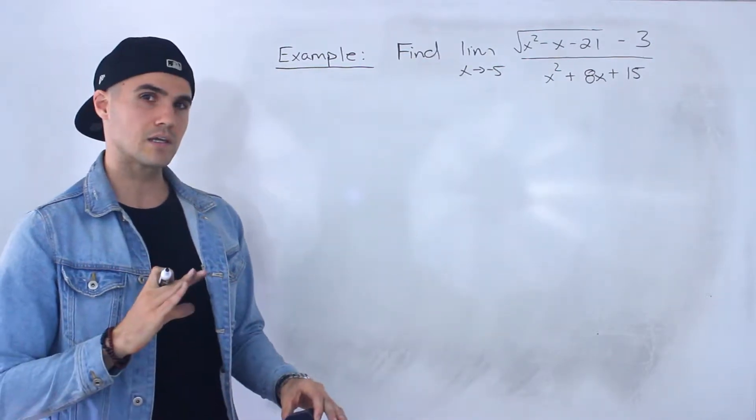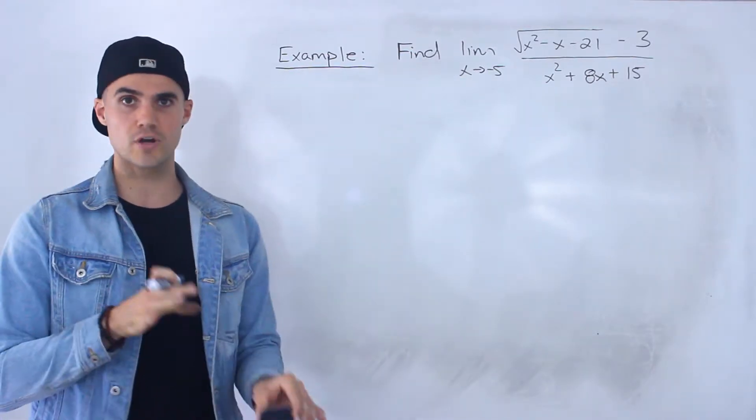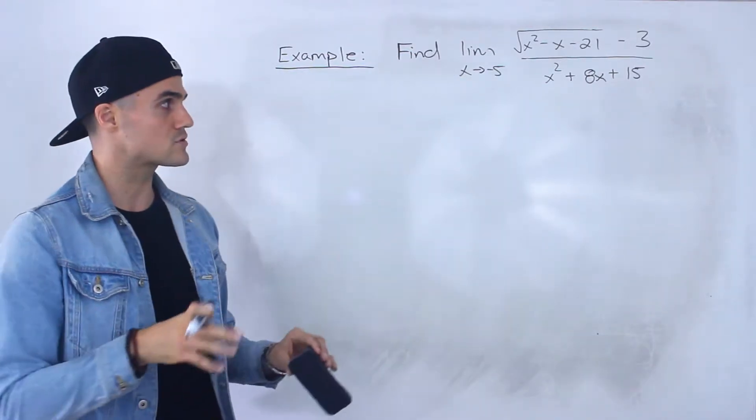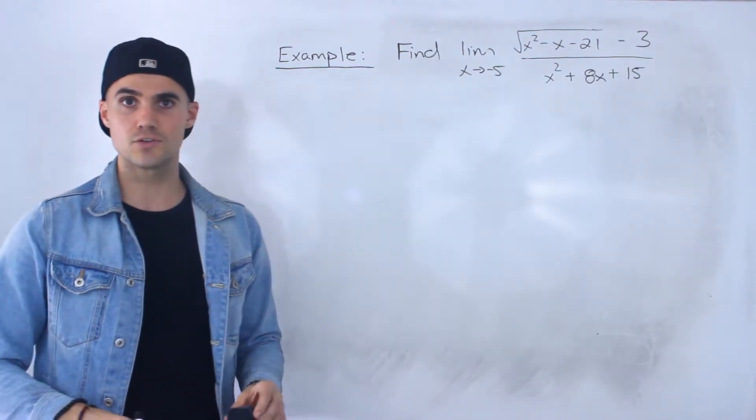So this limit is going to be a little bit intense. There's going to be multiple strategies we're going to use in this one. We're going to have to rationalize and then we're also going to have to use factoring.